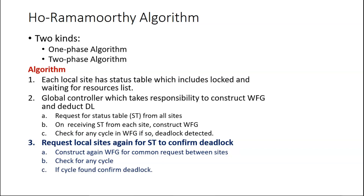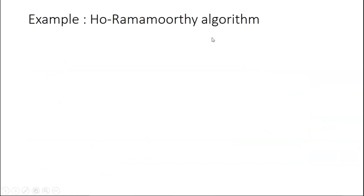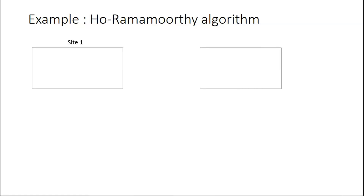So this is the Ho-Ramamurthy algorithm. The first two steps constitute the one-phase algorithm, and all three steps together constitute the complete two-phase algorithm. For the Ho-Ramamurthy example, let's have site one, site two, and a control site.